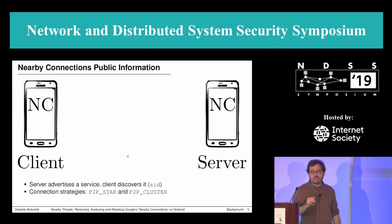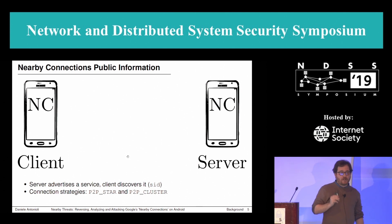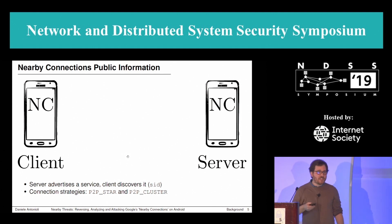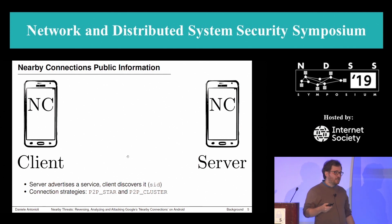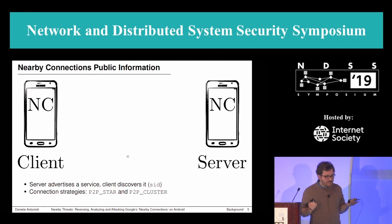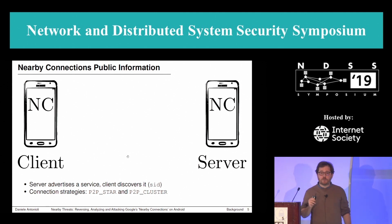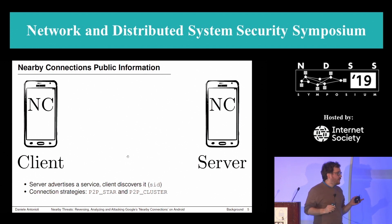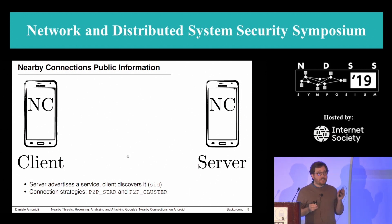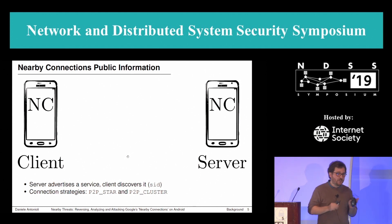Let's see what public information is available about Nearby Connections. As you can see from the picture, we have two smartphones running a Nearby Connections-enabled app. One smartphone is acting as a client and the other as a server. The server advertises a service, the client discovers it, and both must use the same connection strategy. Nearby Connections exposes two strategies: peer-to-peer star and peer-to-peer cluster, and this is a peer-to-peer API that does not require internet.